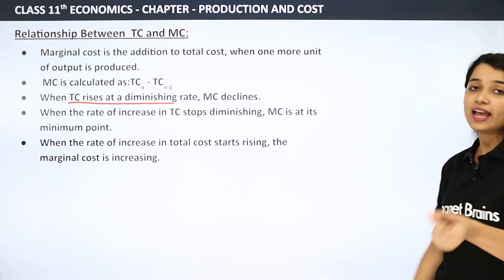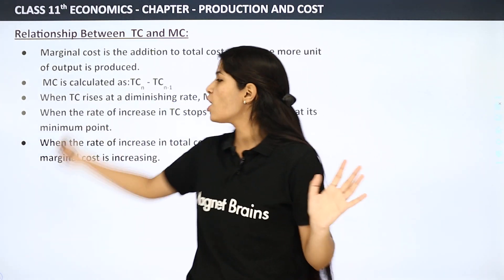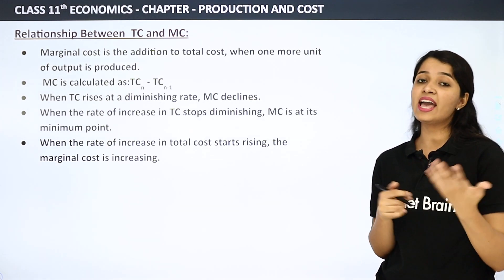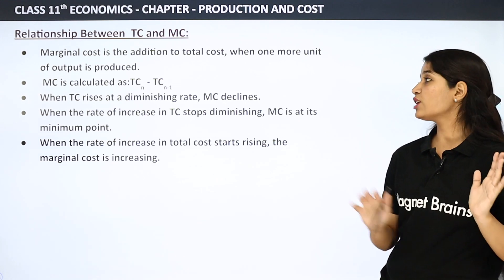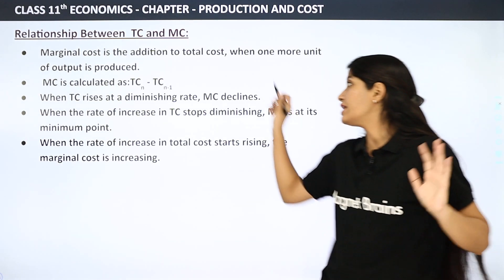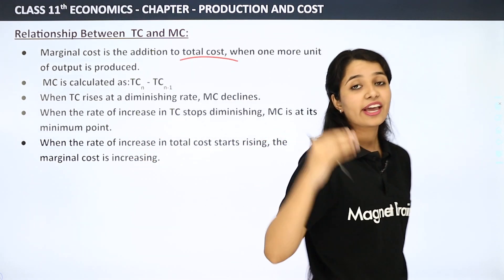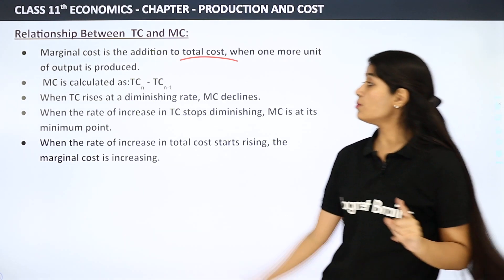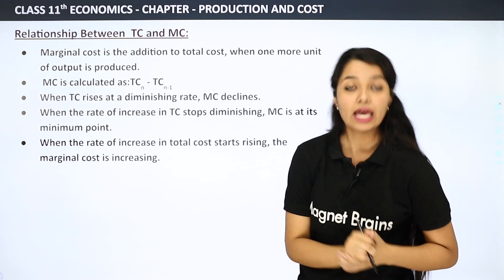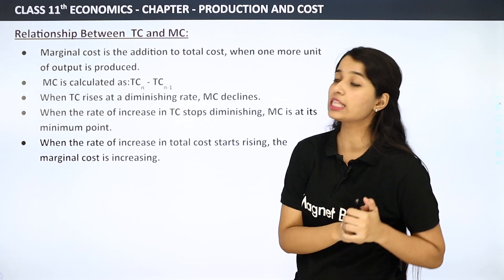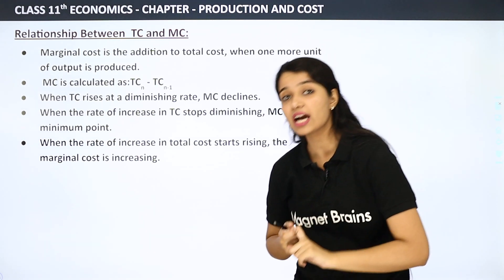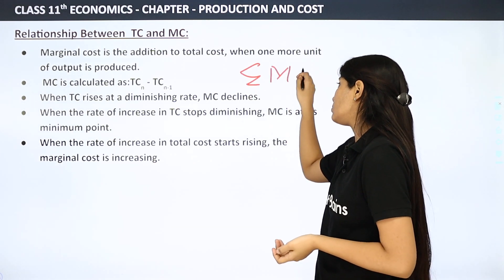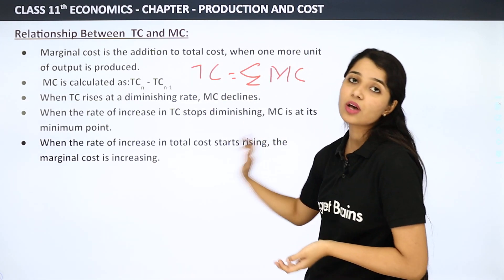So TC and MC relationships are straightforward. The relationship between MC and TC: first, marginal cost is the addition to total cost. Second, MC is calculated as TCn minus TCn-1. Third, if TC is to be calculated and MC is given, we sum up our MC — that is, TC is equal to the summation of MC.